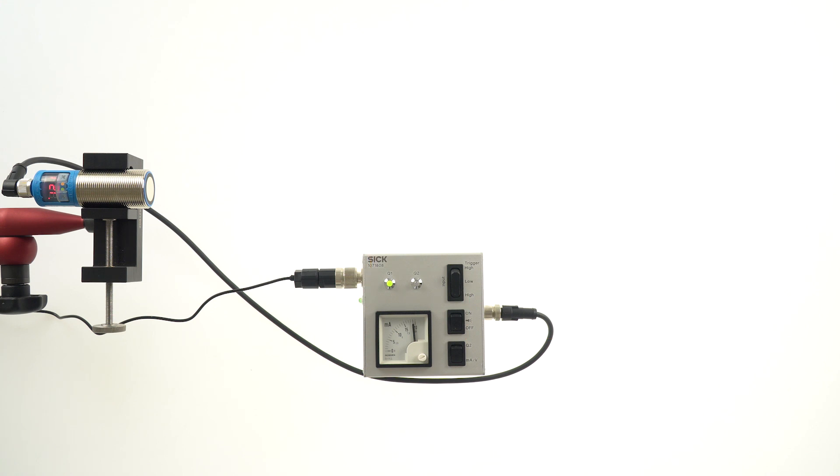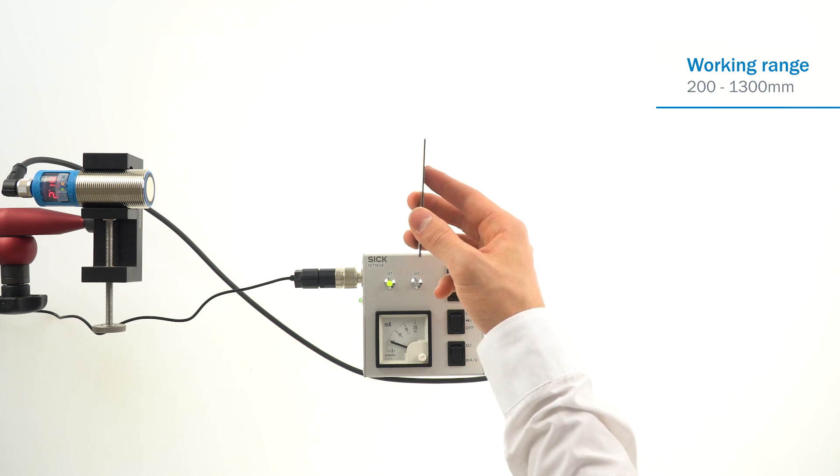The setup is powered up. The measurement distance of the UM30-2 is within the working range of 200 to 1300 millimeters.